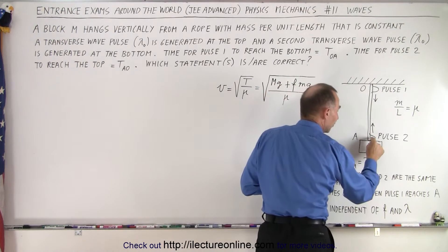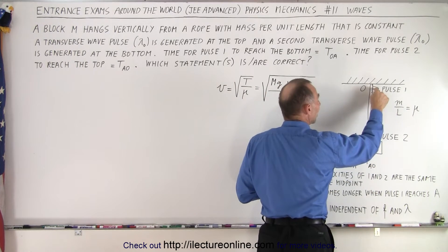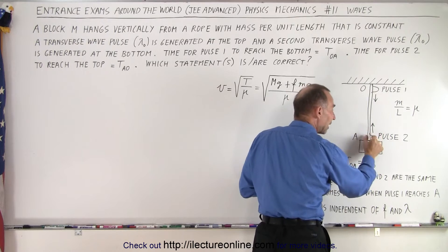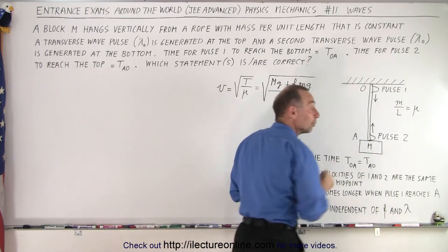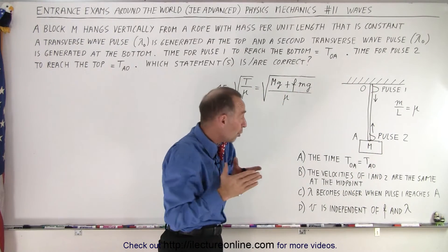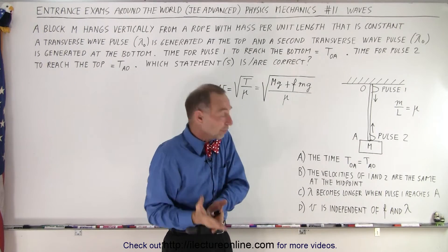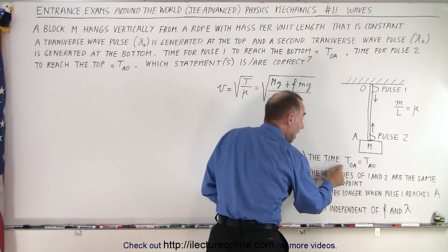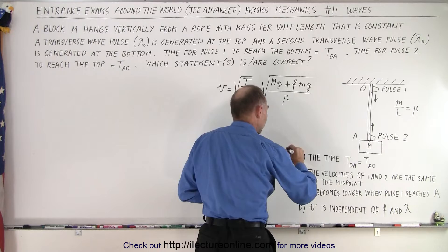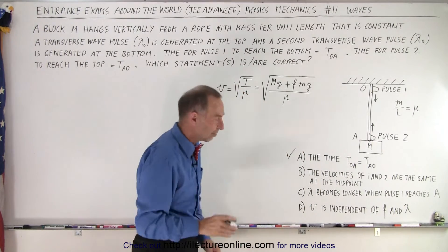The velocity of pulse two on the way up will be the same as the velocity of pulse one on the way down. The magnitude will be the same anywhere along the rope. If the magnitude of the velocity is the same, that means the time must be the same in both directions. So A is indeed a correct statement.